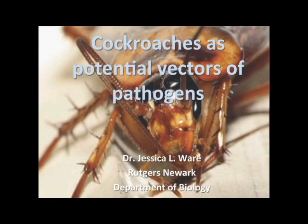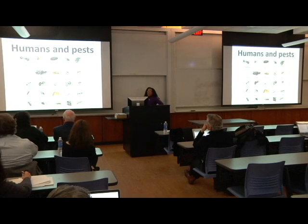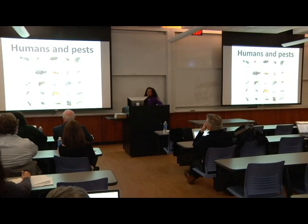I'm going to be talking about cockroaches as potential vectors of pathogens. We've already heard a lot so far about pests living in the middle of Sub-Saharan Africa and in tents. It's not uncommon to think about pests in urban settings, and we have a huge host of different pests that are associated with humans.